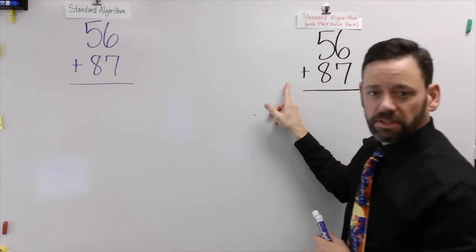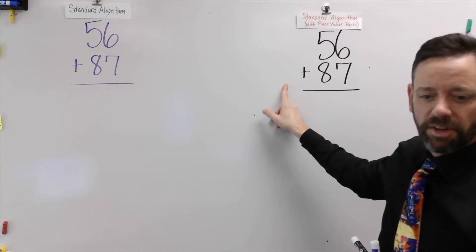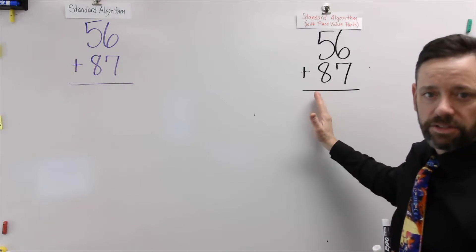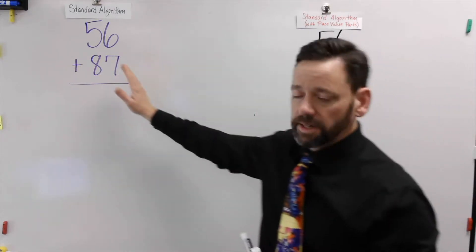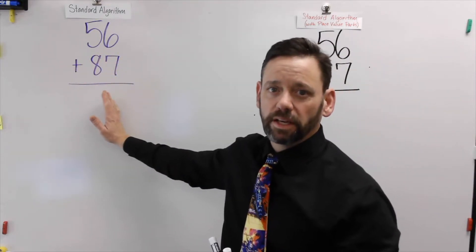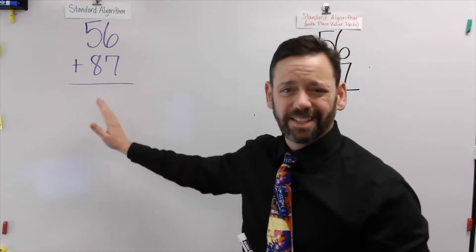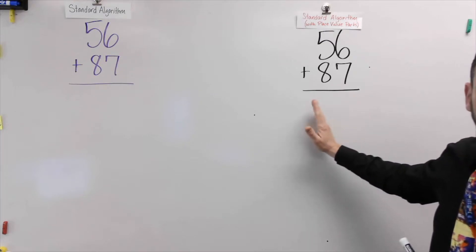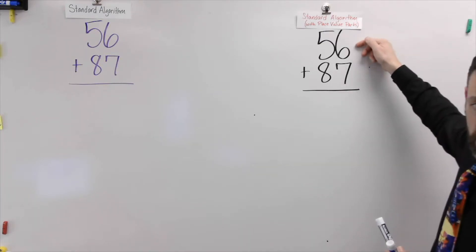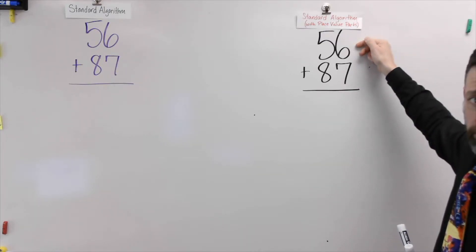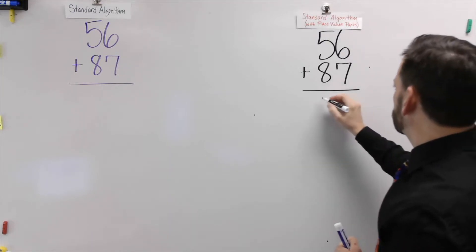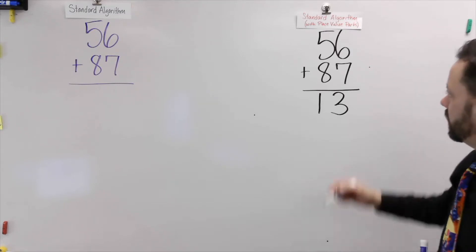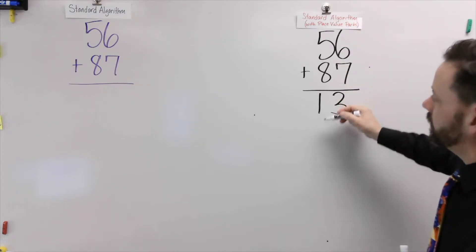I'm going to start over here with the standard algorithm showing all the place value parts. When I do this particular strategy, I can start with either the tens or the ones. When I do the standard algorithm, I need to start with the ones and then move to the tens. So I'm going to start with the ones. The first thing I'm going to do is add my ones together: 6 plus 7, which is 13. Now I'm going to write the whole number underneath — 13 — keeping the ones lined up and the tens lined up.